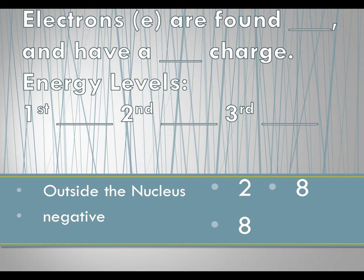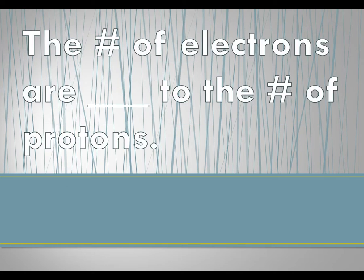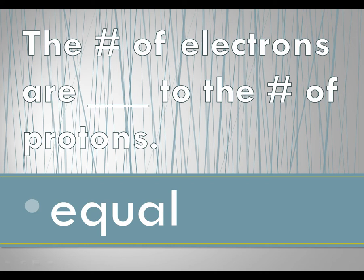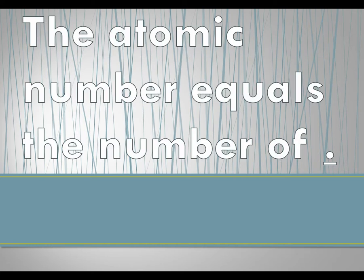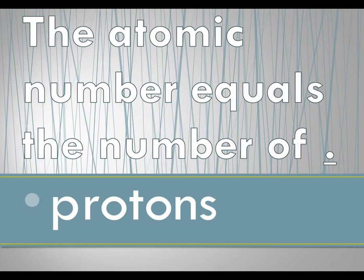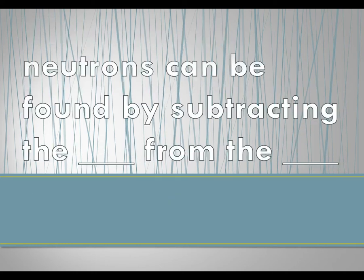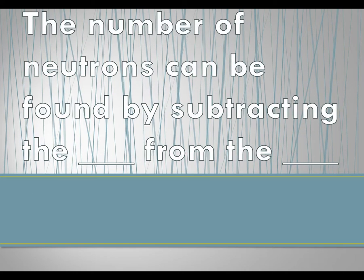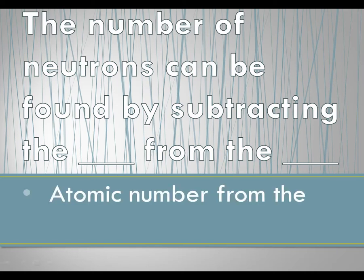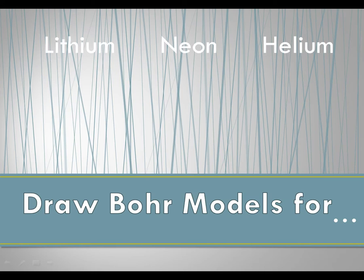The number of electrons is equal to the number of protons, and this is true for a neutral atom — that's what we're going to be working with in our class. The atomic number is equal to the number of protons. The number of neutrons can be found by subtracting the atomic number from the mass.